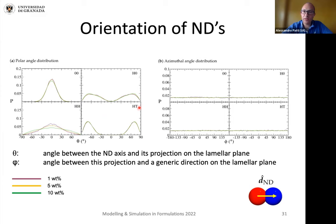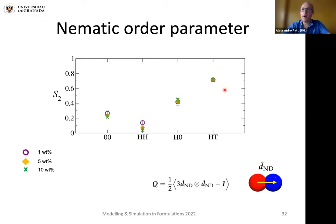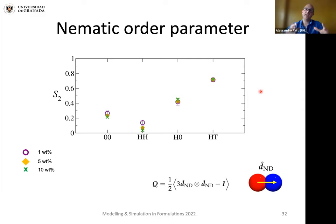Looking at the Janus nanodimers — particularly the HT type — we see the development of two peaks at approximately 70 to 80 degrees, meaning the nanodimer axis is nearly perpendicular to the lamellar plane at the interface. So we are able to locate nanoparticles of a given sort into a precise position, and we can also orient them. The alignment of these nanodimers is quite high, with a nematic order parameter that is significantly large. The conclusion is that they form a sort of nematic liquid crystal within a background ordering that has a smectic signature, which is quite remarkable.